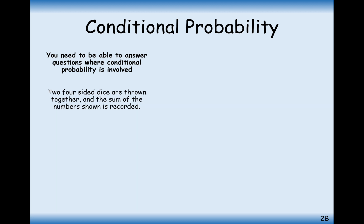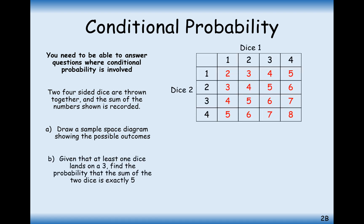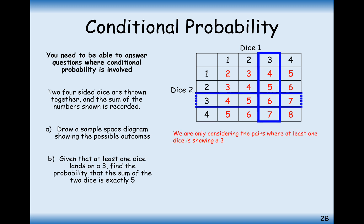Moving on to one more question. Two four-sided dice are thrown together and the sum is recorded. Draw a sample space diagram showing the possible outcomes. Given that at least one dice lands on a three, find the probability that the sum of the two dice is exactly five. We now know for sure that at least one dice lands on a three, so we can only look at these seven options.